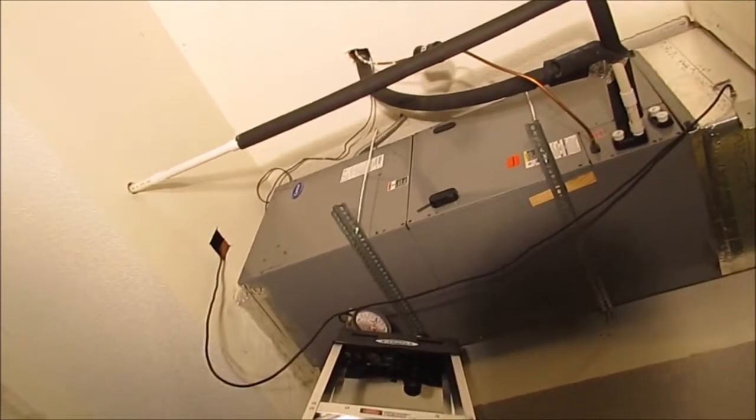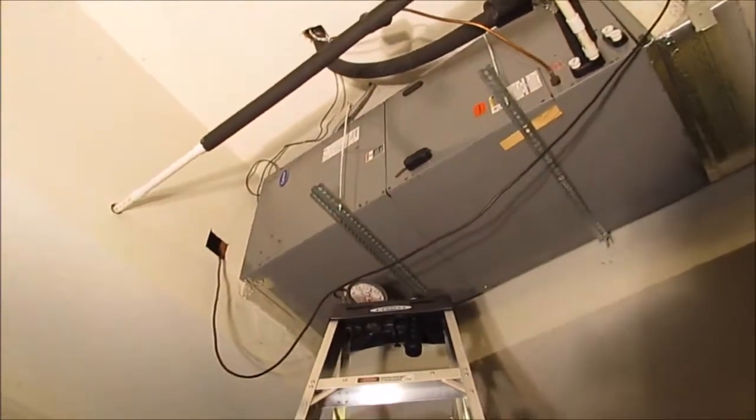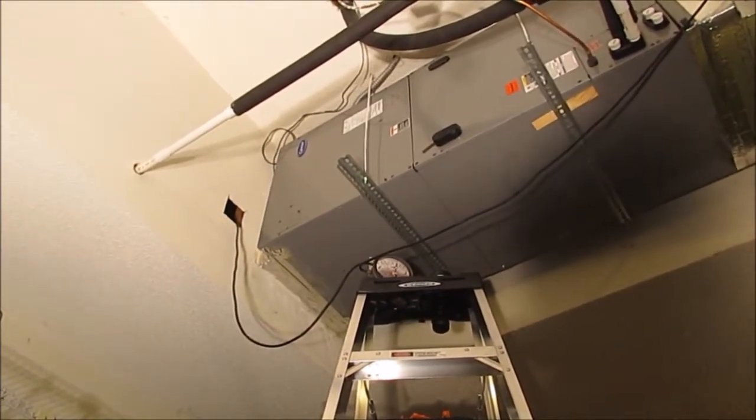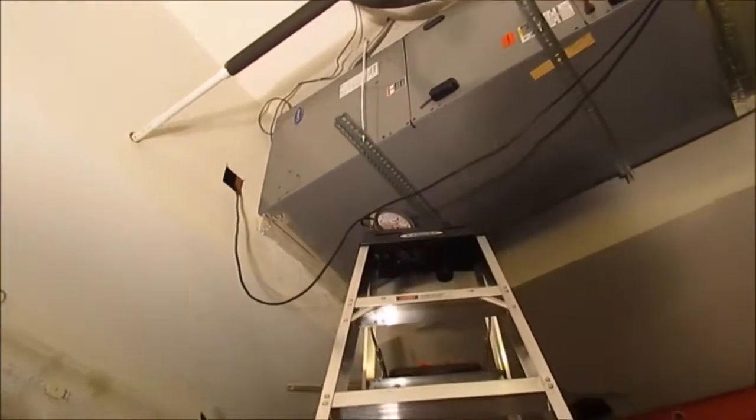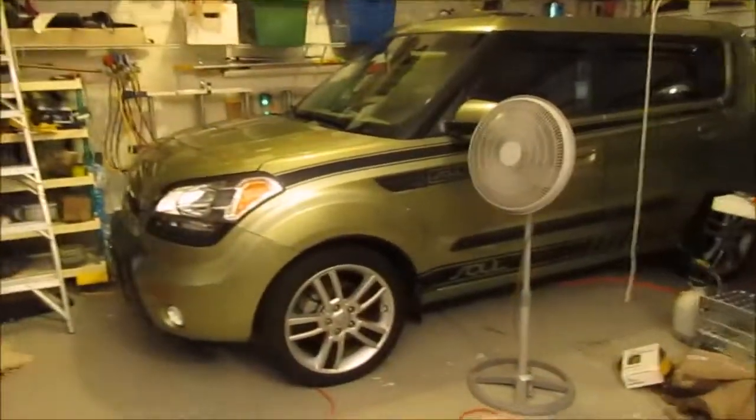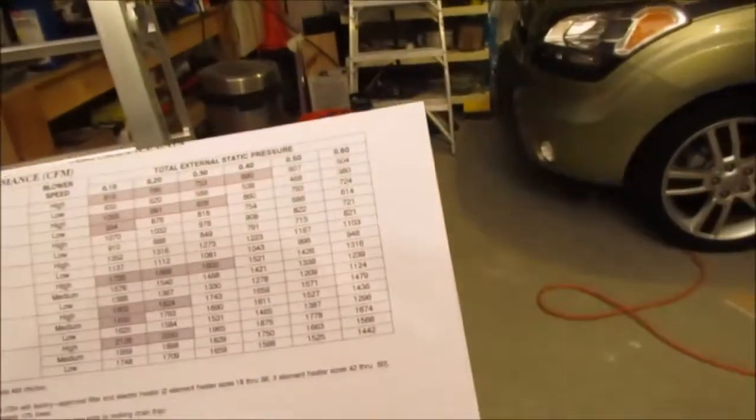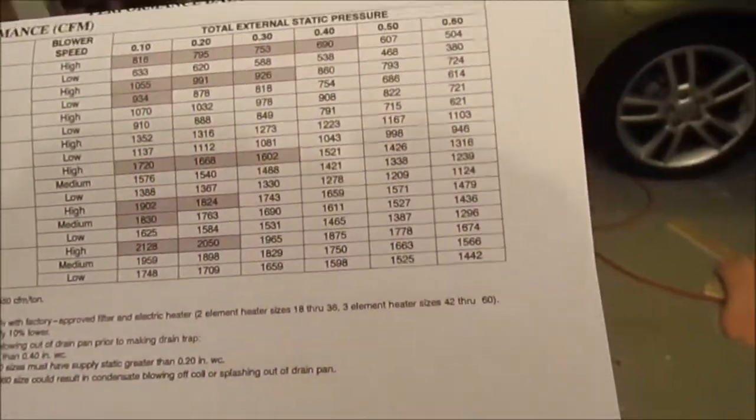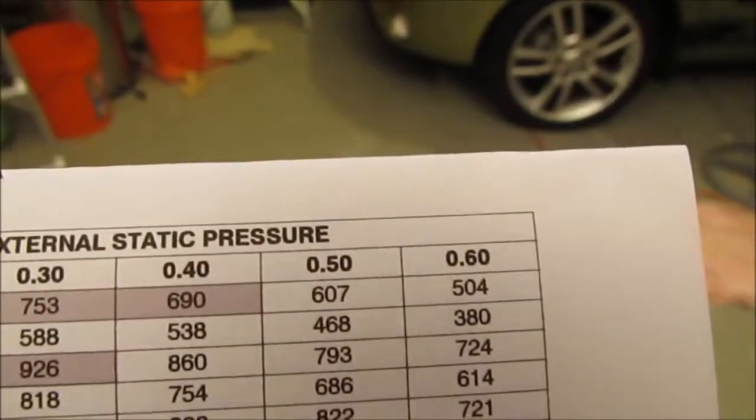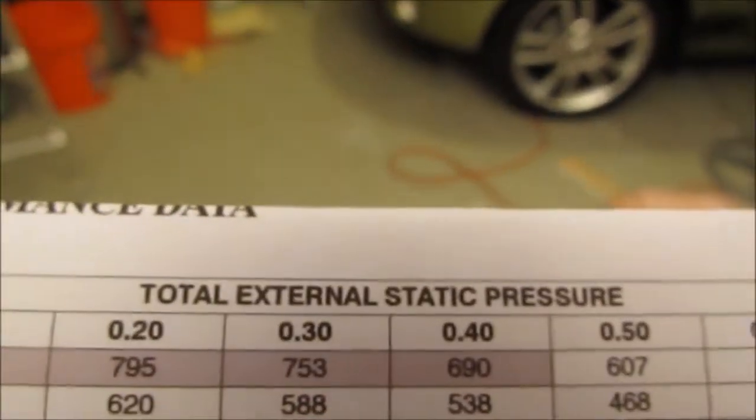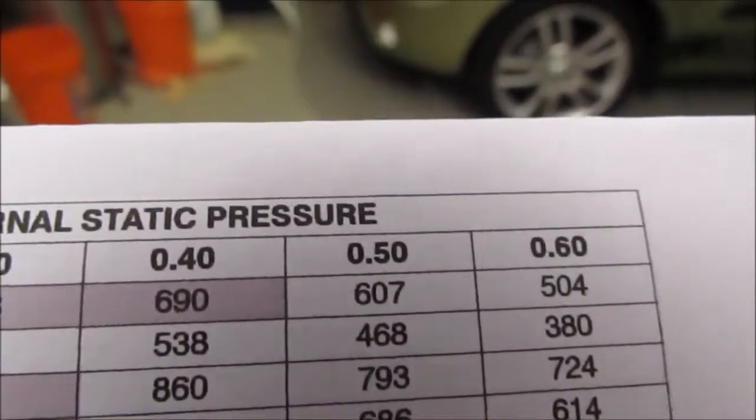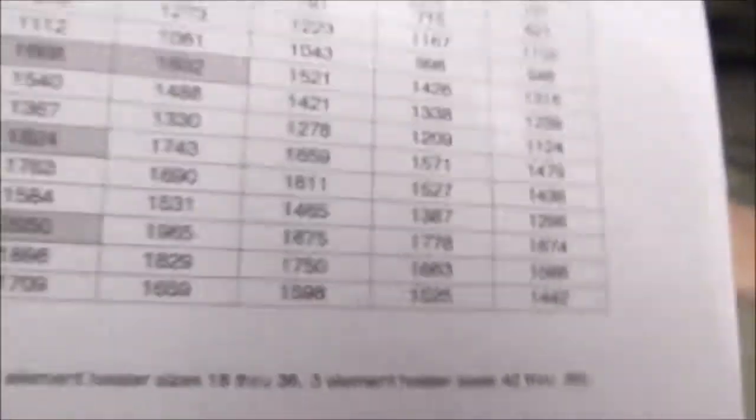The alternate method to determining CFM through this air handler is to use this magnehelic gauge or any static pressure gauge that reads inches of water column. The manufacturer Carrier, like many manufacturers, gives you this calibrated chart.